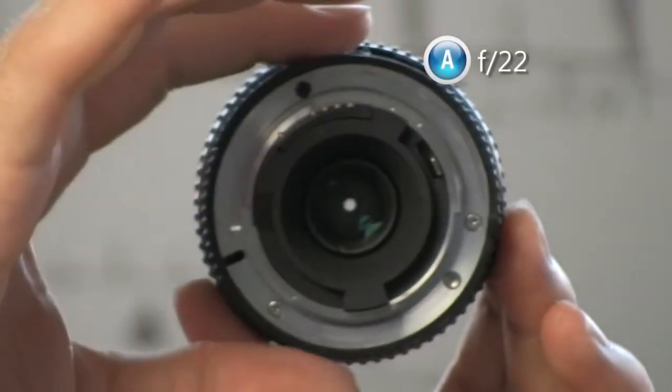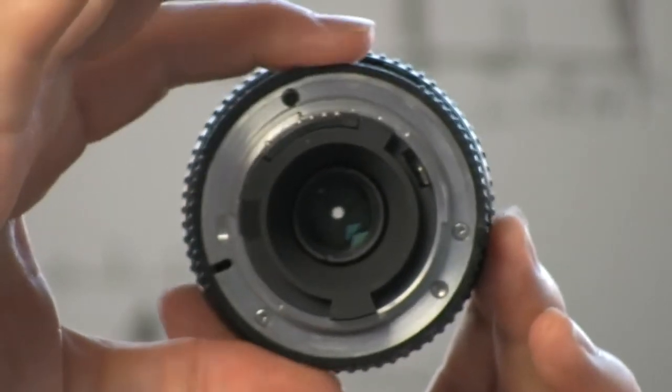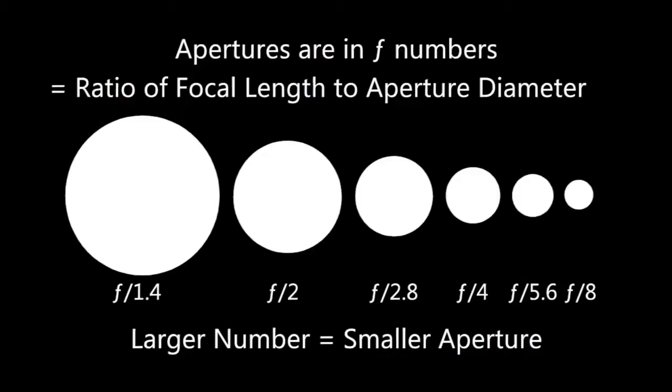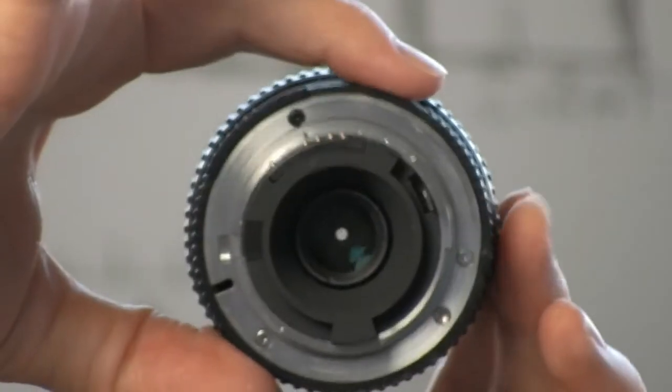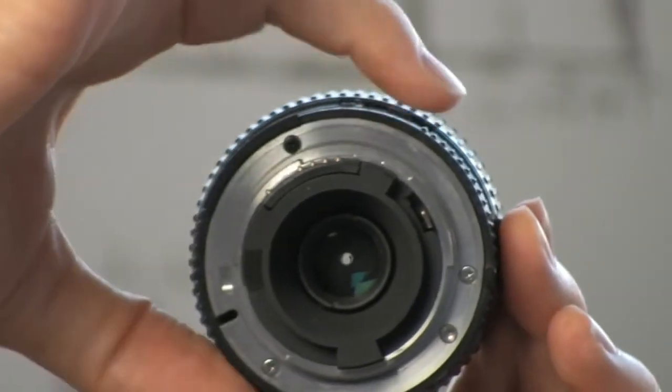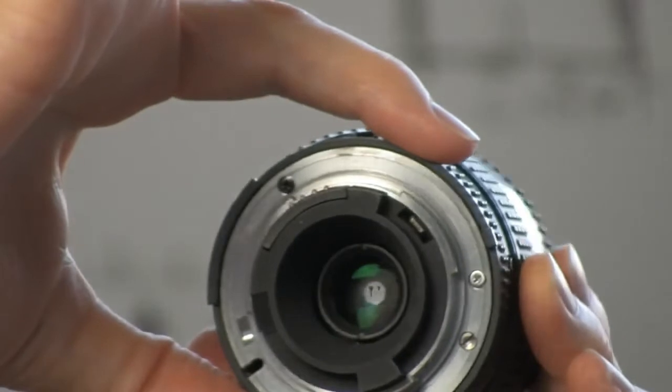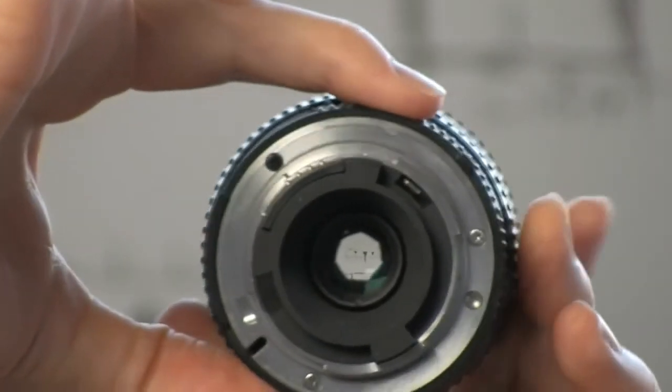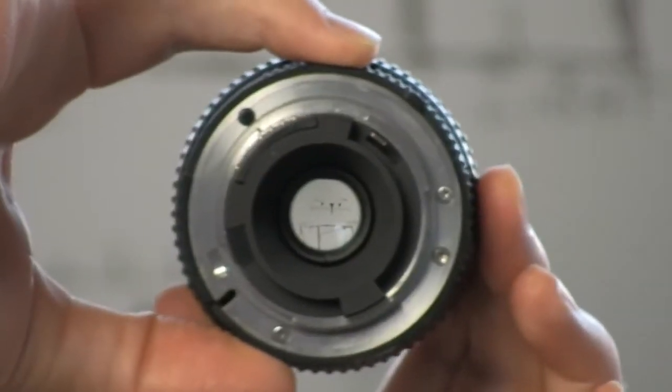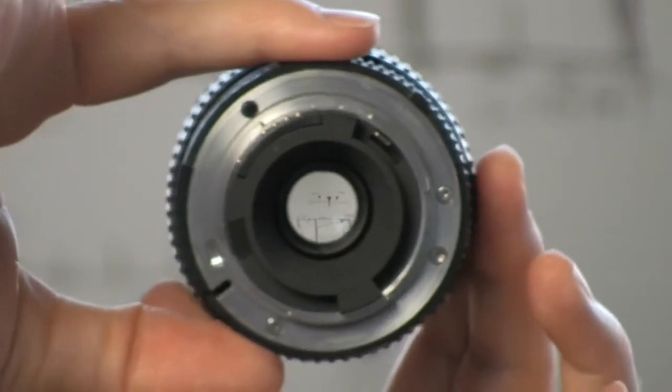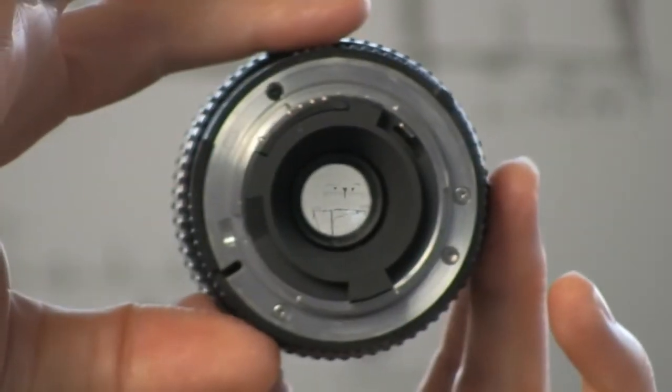Aperture is kind of strange, because it's a ratio actually. The larger number is a smaller aperture. So it's kind of like a fraction. If it has a bigger number at the bottom, it's actually a smaller aperture. So f22 is the smallest aperture, and then we click it to f16, 11, 8, 5.6, and then 3.3. So that's as large as this particular lens goes.